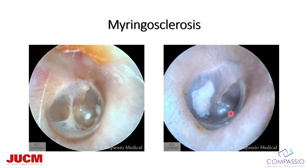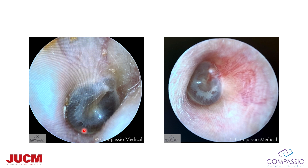The most common thing you're going to see that looks abnormal is myringosclerosis. This almost looks like a meniscus of fluid, but it's not — it's calcification often coming from chronic inflammation of the ear. This is a big calcification that some might even think is a cholesteatoma. These are patients that often come in having been treated with multiple courses of antibiotics because they have constant recurrent infections or fluid. But that's not fluid — this is actually myringosclerosis, giving the illusion that there are bubbles.